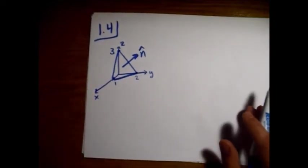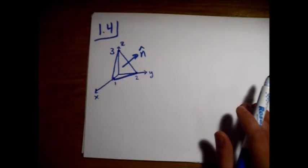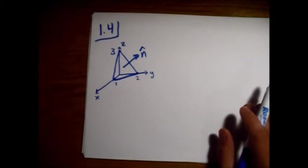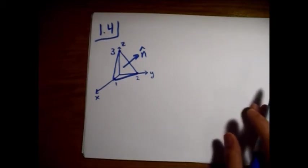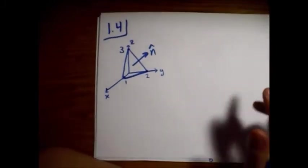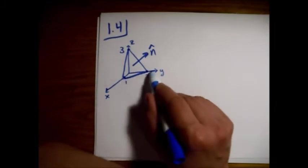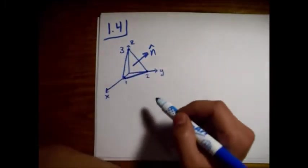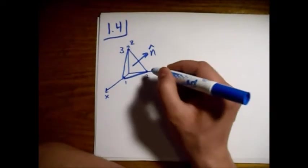So we need to find the components of the unit vector. In order to do this, we'll just take two vectors that are in this plane and use the cross product of the two.